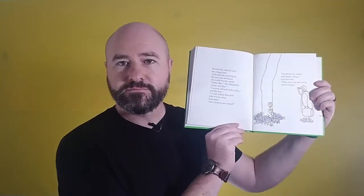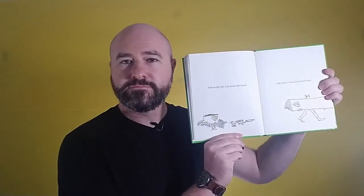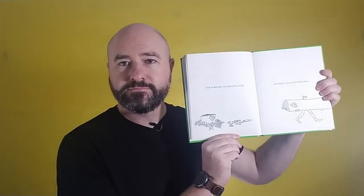I am too old and sad to play, said the boy. I want a boat that will take me far away from here. Can you give me a boat? Cut down my trunk and make a boat, said the tree, and then you can sail away and be happy. So the boy cut down her trunk and made a boat and sailed away. And the tree was happy, but not really.